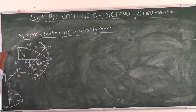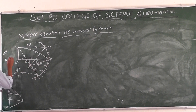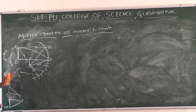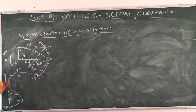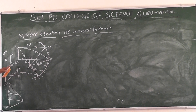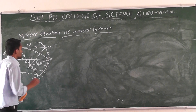AB is our object and A'B' is our image. We get a real and inverted image in the concave mirror — inverted means opposite to the original direction. The original direction of the object is shown by arrow AB, but the image A'B' is in the opposite direction.